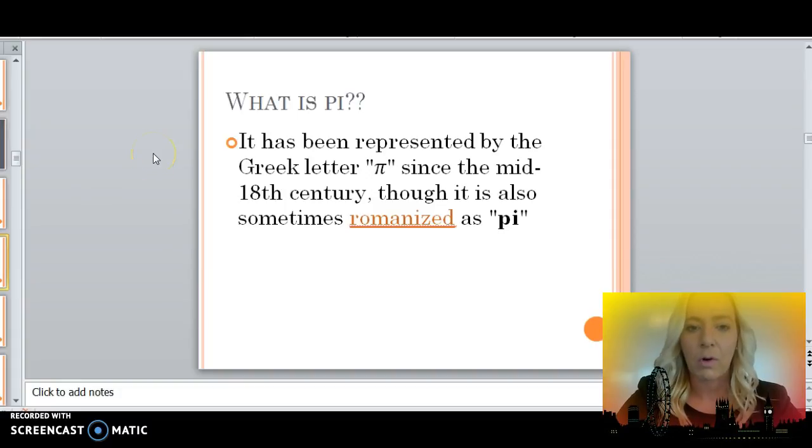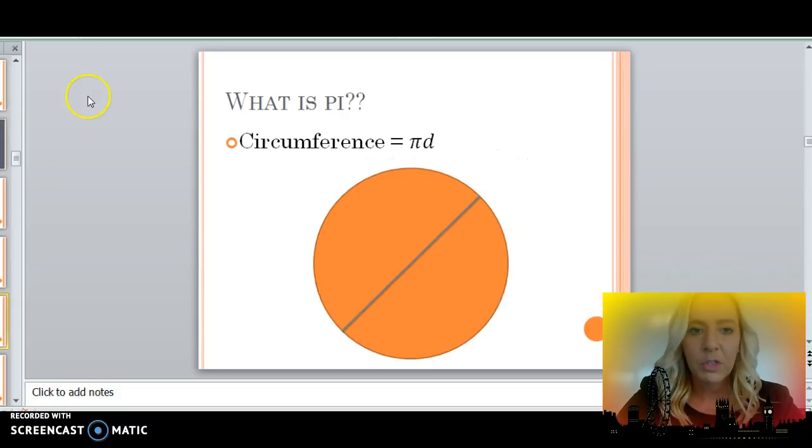When we're going to start talking about circles, and this will apply when we talk about volume of cylinders since it's a circle base, pi is a mathematical term that we often use. Pi is represented by a Greek letter, and this is the Greek letter that you'll often see in formulas. And that symbolizes the word pi, or the concept of pi, which really dates back to the mid-18th century. We spell it as P-I.